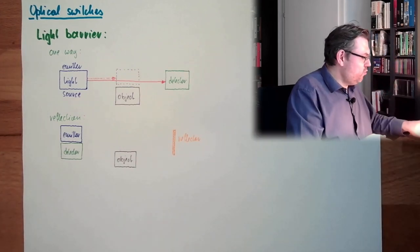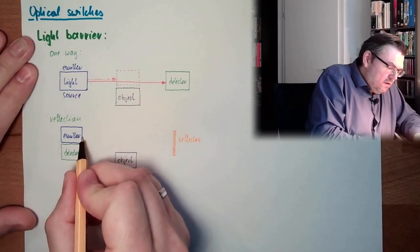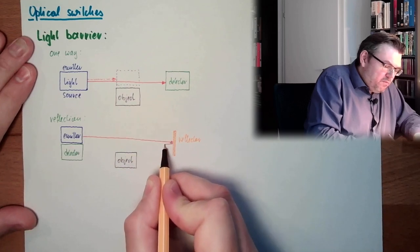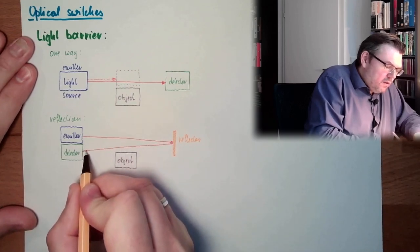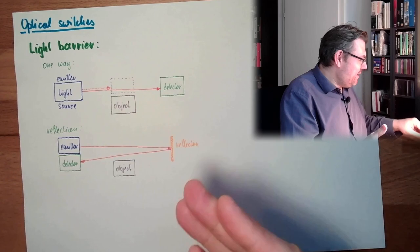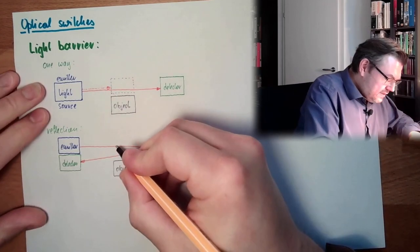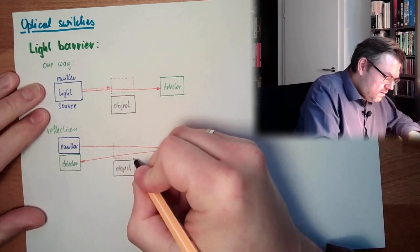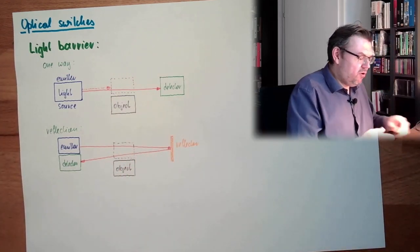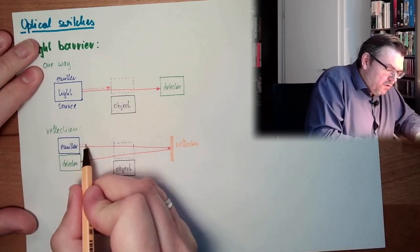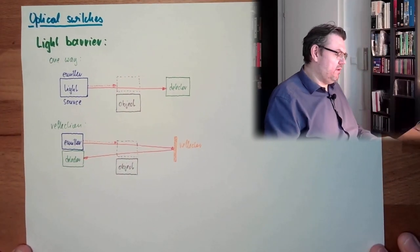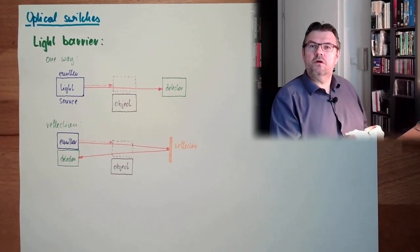And the light usually is emitted by the emitter, is reflected by the reflector, and detected by the detector. Good names, right? And if now the object is in the middle somewhere, the light will not get past the object, not be reflected or the reflection will be blocked by the object. And the detector does not detect anything now. This is how light barriers work.